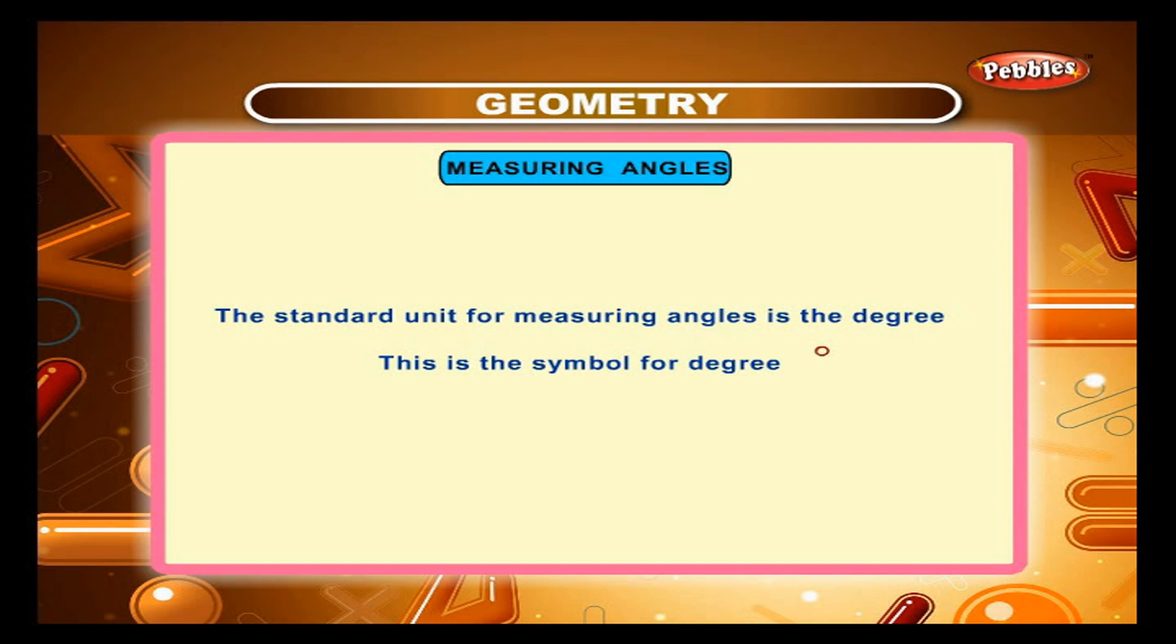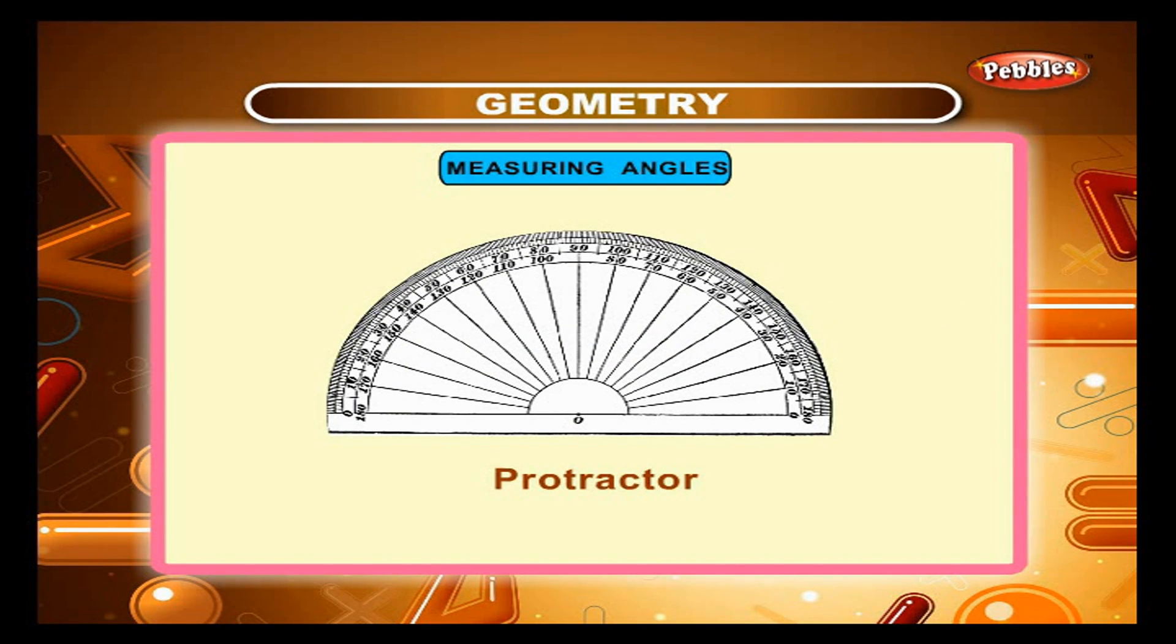This is the symbol for degree. To measure an angle in degrees, we use a protractor. You will find it in your geometry box.